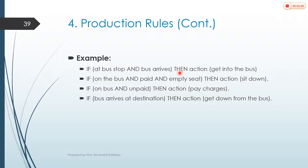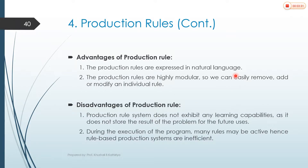So this is a simple if-then example for production rules. The first part represents the condition and the second part represents the action. The advantage of production rules is that they can be expressed in natural language. Production rules are highly modular, so we can easily remove, add, and modify individual rules.